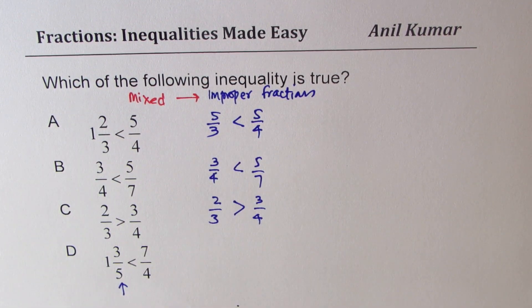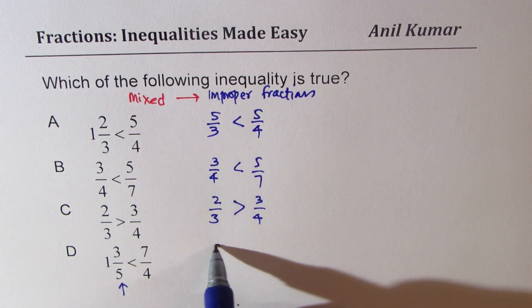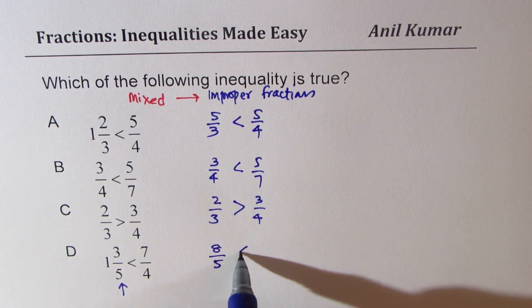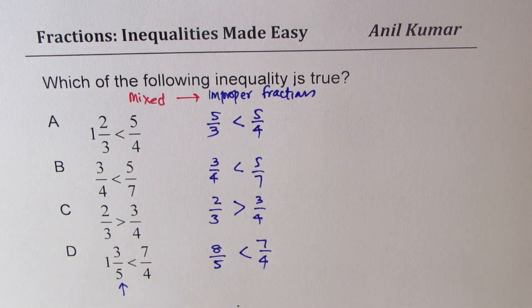How to write it? 1 times 5 is 5, and then when you add 3, you get 8. So it becomes 8 over 5. That is how you write them as improper fractions.